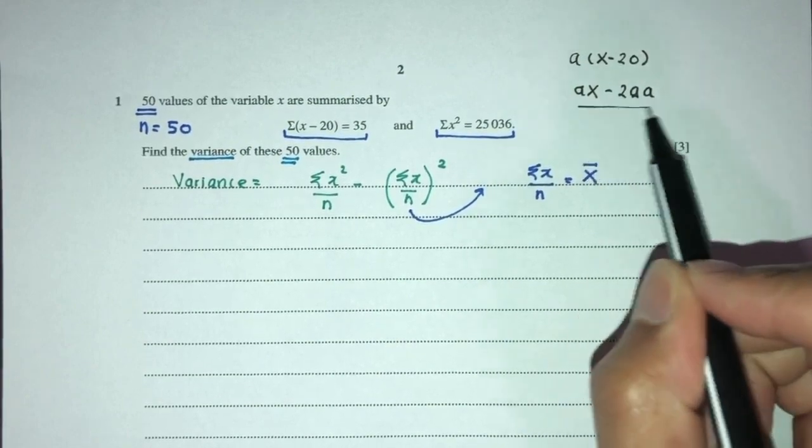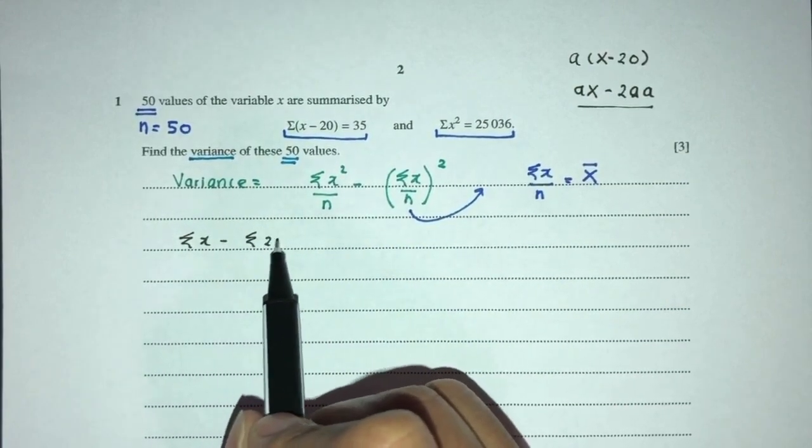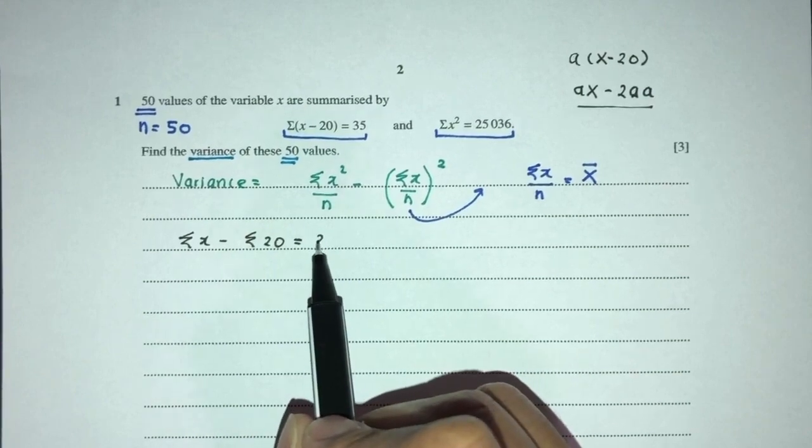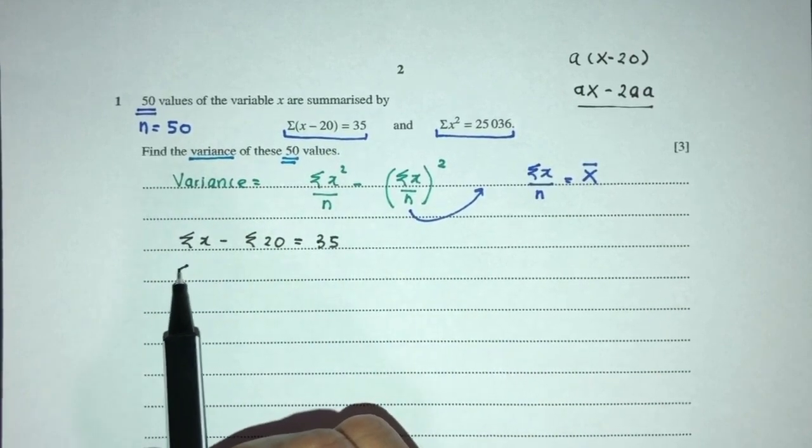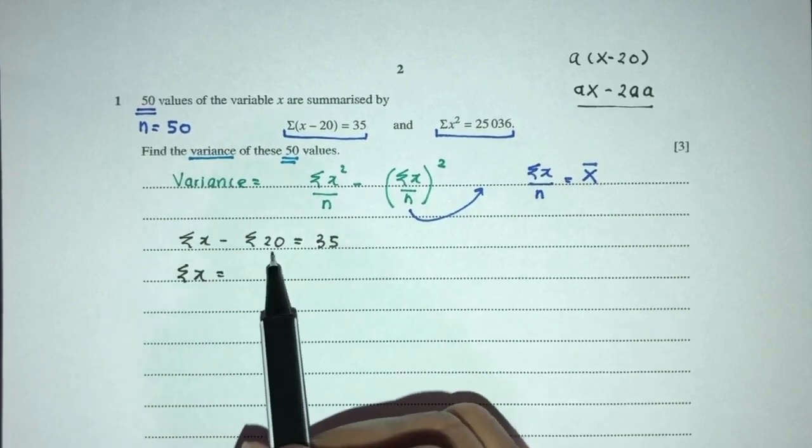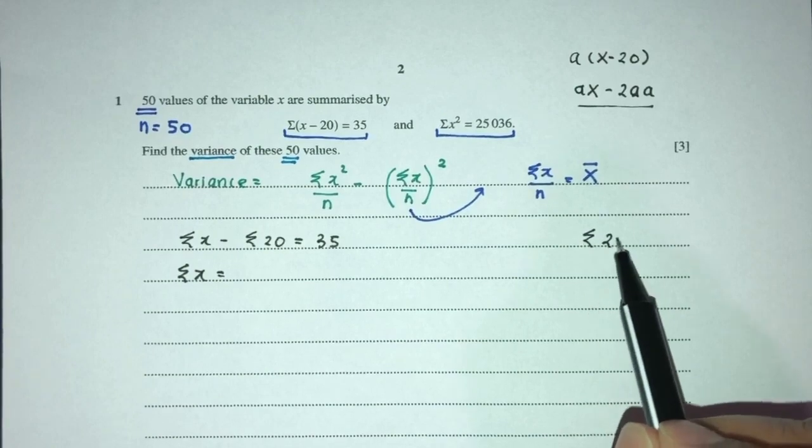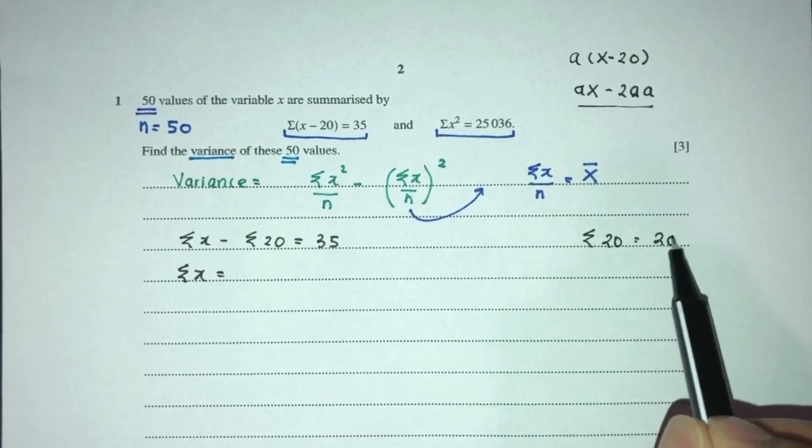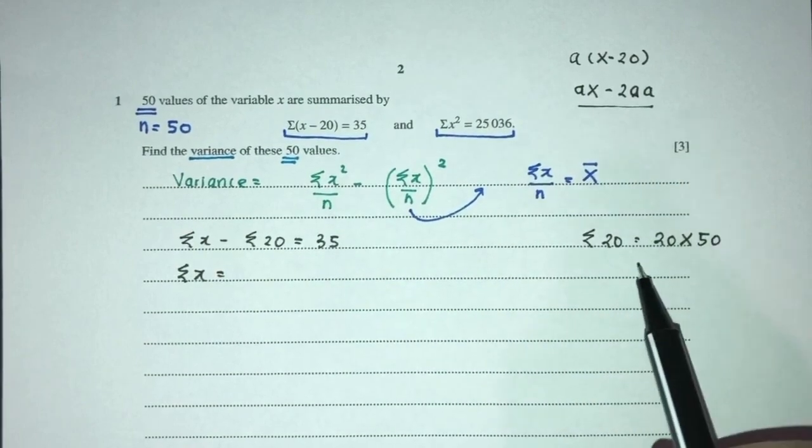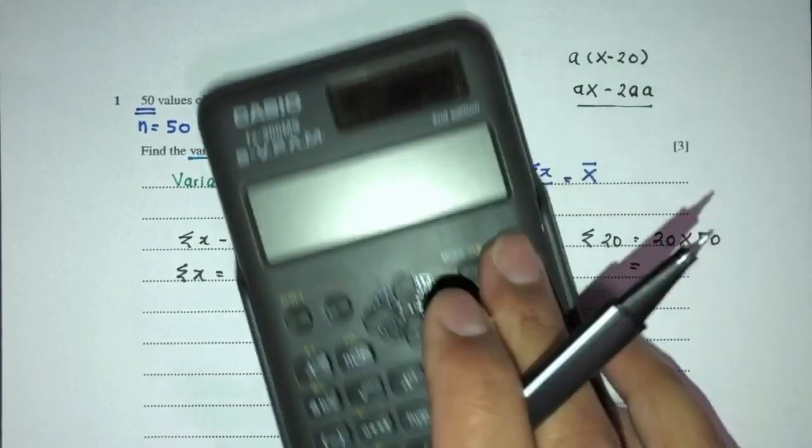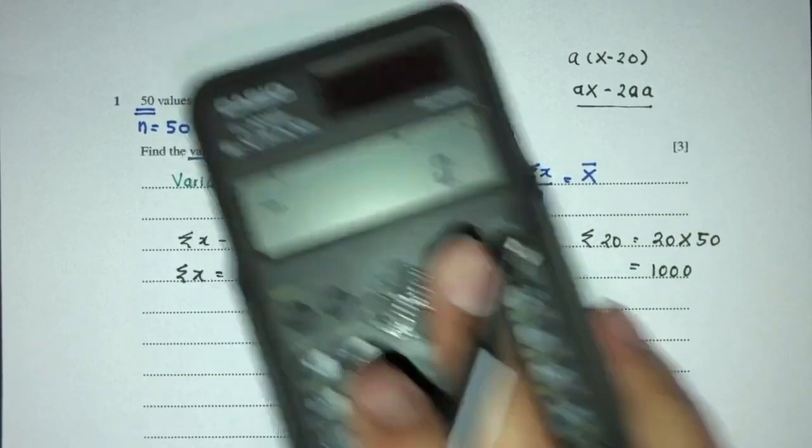So same thing, that will be summation of x minus summation of 20 equals 35. Now this we don't know yet, so let's write this down. But this we know, summation of 20 is basically 20 times n, which is 50. That will be 1,000.